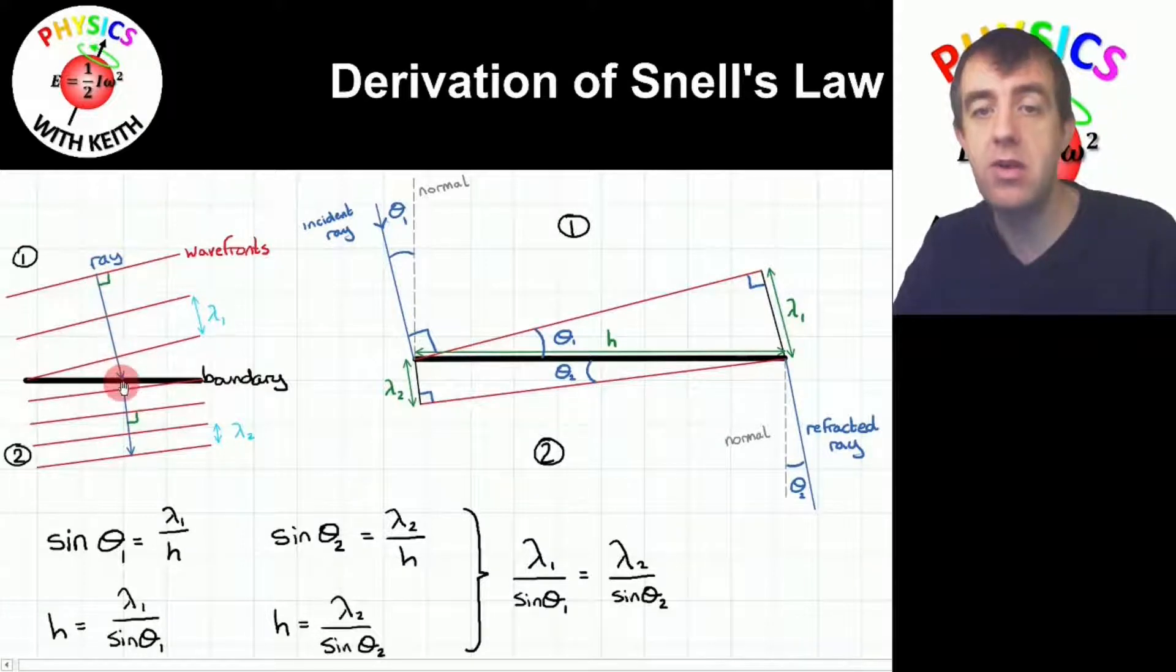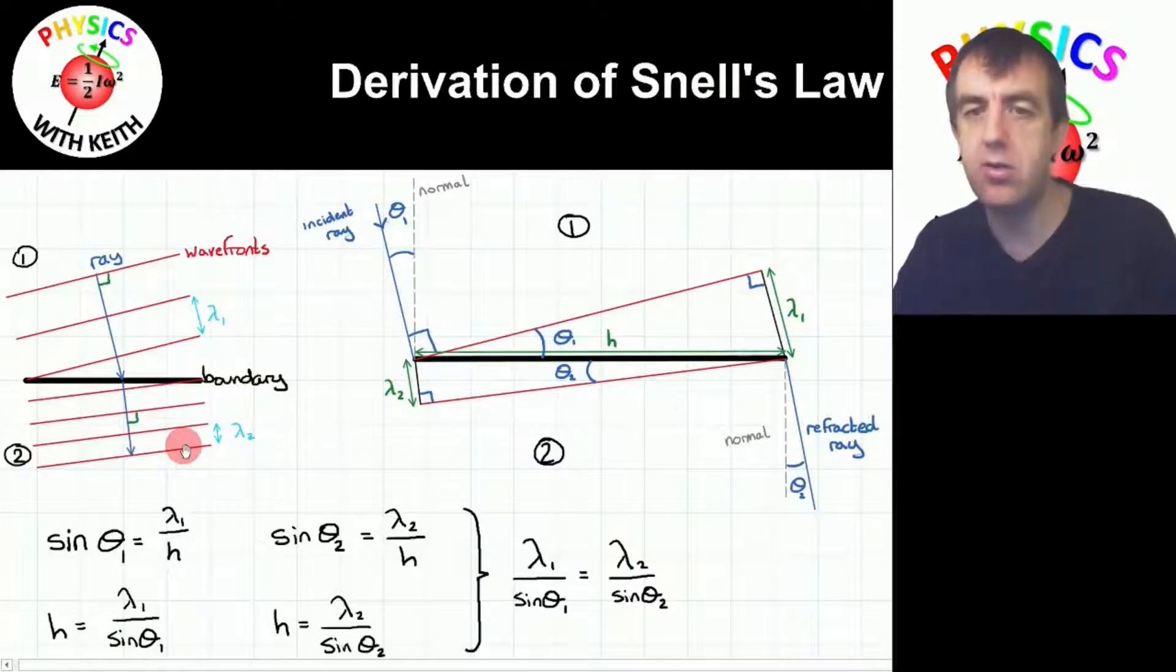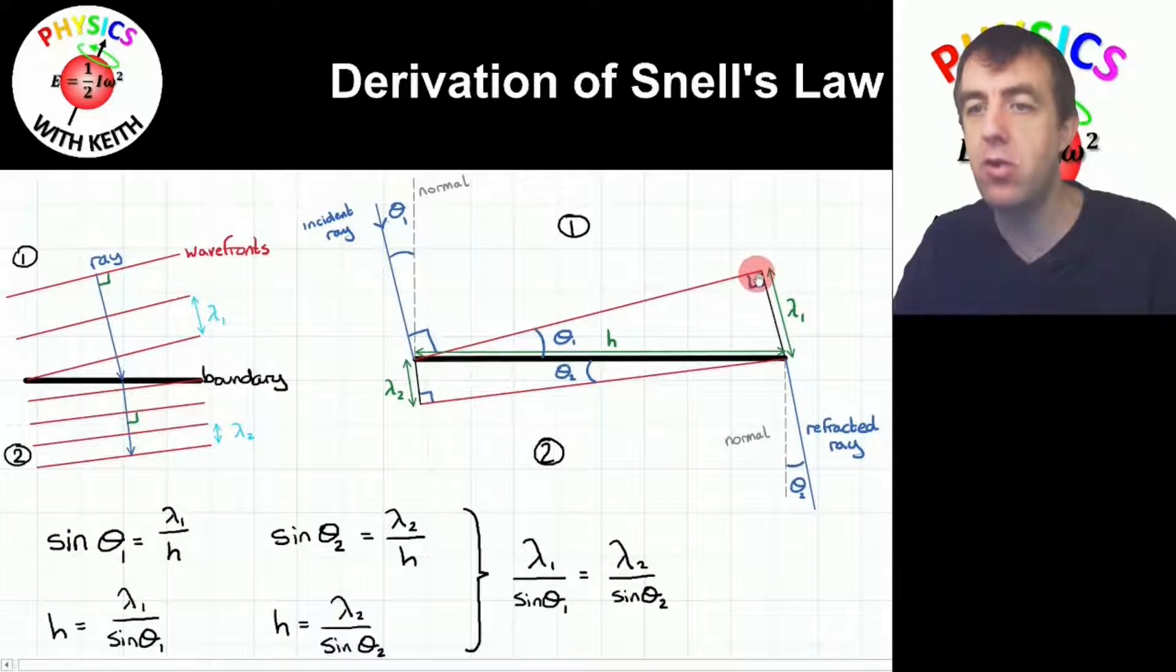So the ray enters perpendicular to the wavefronts and refracts. You will notice that the wavefronts are at a different angle to the wavefronts that entered. The incident ray and the refracted ray are traveling in slightly different directions. And it could be that the refracted ray bends the other way. That's okay as well. Snell's law can handle both situations.